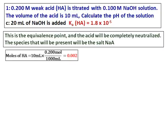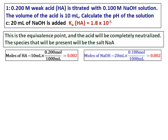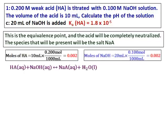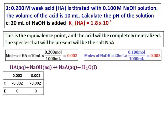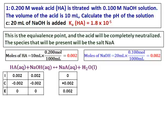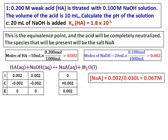As before, we start by calculating the moles of HA and NaOH, then set up the neutralization equation and the ICE table. The moles of both HA and NaOH become zero, and I have only the salt NaA. Therefore, the pH of the solution will depend only on the ionization of NaA.